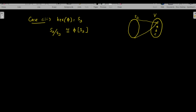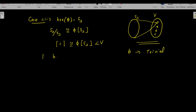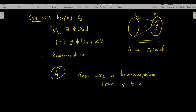Case 3: kernel of φ = S₃ itself. All elements in S₃ are mapped to the identity element e in V. By the Fundamental Homomorphism Theorem, S₃/S₃ is isomorphic to φ(S₃), and since S₃/S₃ contains only one element, φ(S₃) = {e}. This is the trivial homomorphism — exactly one such homomorphism exists. So altogether there are four different homomorphisms from S₃ to V. Using this method, you can count the number of homomorphisms between two finite groups using the Fundamental Homomorphism Theorem.